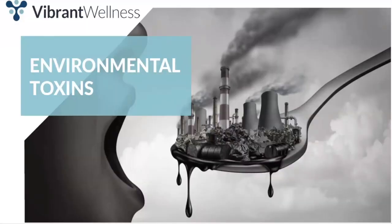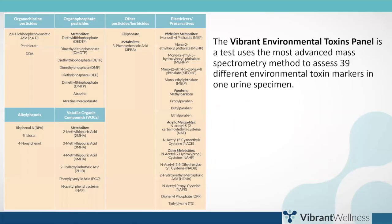Today, I am pleased to present to you Vibrant's Environmental Toxins Panel. Vibrant's Environmental Toxins Panel is intended to help you make healthy lifestyle, dietary, and treatment choices. It is intended to be used as a tool to encourage a general state of health and well-being. Vibrant's Environmental Toxin Panel uses the most advanced mass spectrometry method to assess 39 different markers to assess environmental toxins in one urine specimen. Screening for environmental toxins can aid practitioners in uncovering true root causes of toxicity from common environmental sources and provide a clear roadmap to detoxification and healing.